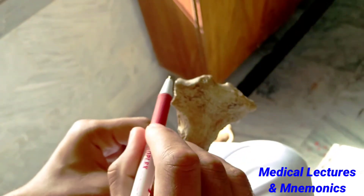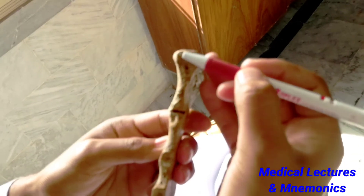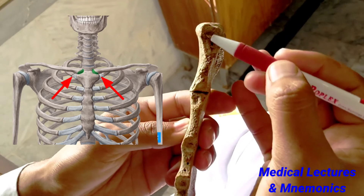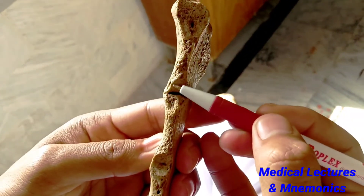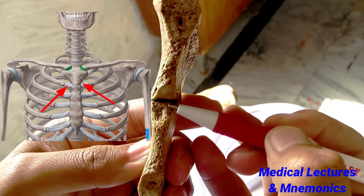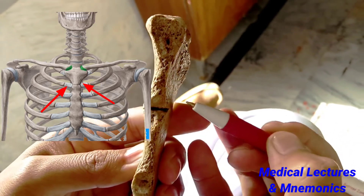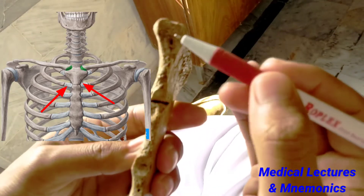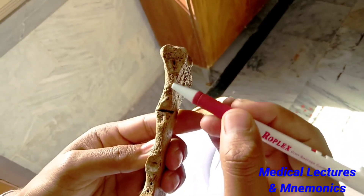It has two lateral borders. On the lateral border there is a full facet for the first costal cartilage of the rib, where the first costal cartilage is articulated. Below, there is a demifacet for the second costal cartilage of the rib, with a corresponding demifacet on the lateral border of the body of the sternum. The second costal cartilage is articulated here, and in between these two facets there is a depression, as you can see.